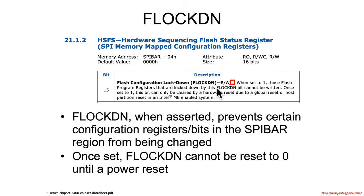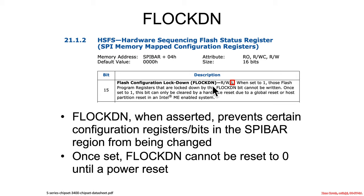FLOCKDN is a bit that, when set to 1, makes a whole bunch of other registers all of a sudden become non-writable. It says those flash program registers locked down by this bit cannot be written. It doesn't actually tell you what they are — you have to scrape around in the documentation looking for things that reference FLOCKDN.